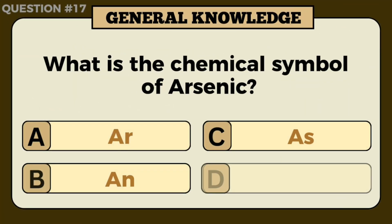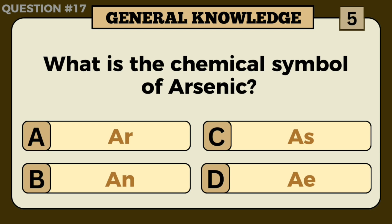What is the chemical symbol of arsenic? Answer: C — As.